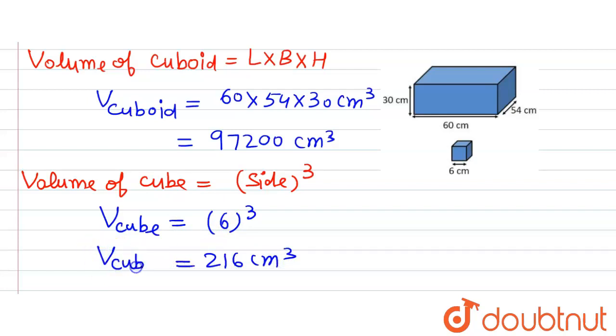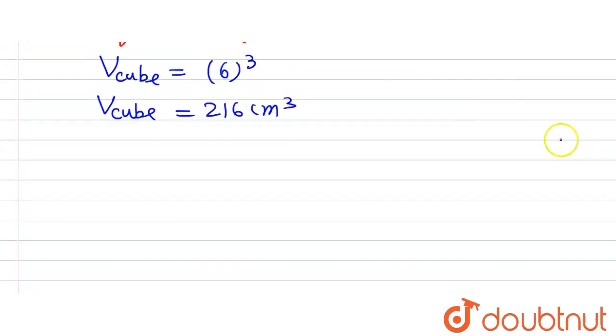Now in the question we were asked how many cubes can be placed inside the cuboid. For that, the formula that we are going to use is: number of cubes will be equal to volume of cuboid divided by volume of one cube.